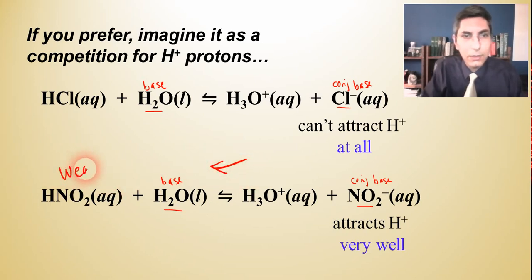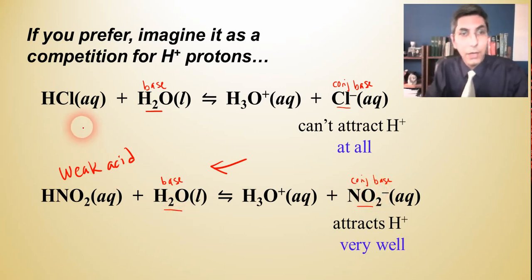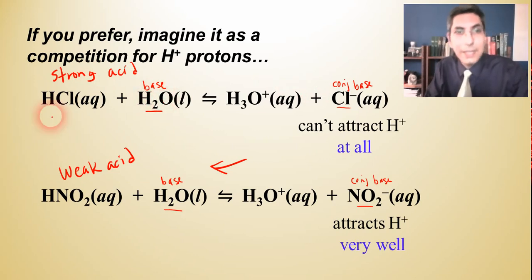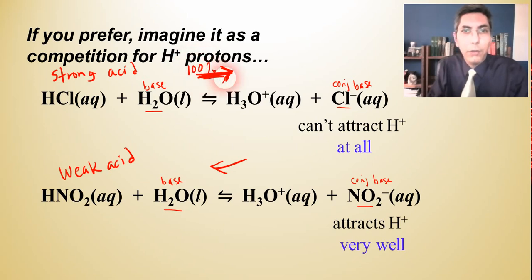Because nitrite is better at reclaiming H⁺, the equilibrium lies very far to the left — that's why nitrous acid is called a weak acid. Its conjugate base is pretty good at taking those H⁺ back. For HCl, however, since water is very good at stealing H⁺ and chloride is awful at it, the reaction goes 100% to the right — no meaningful reverse reaction exists.